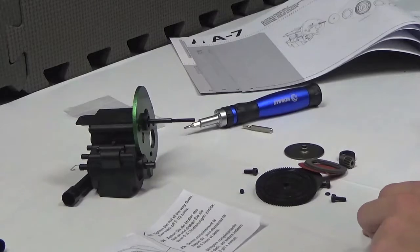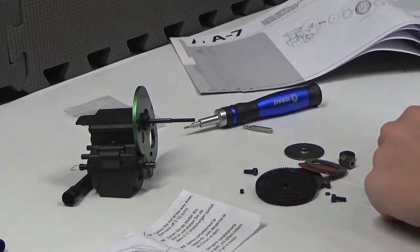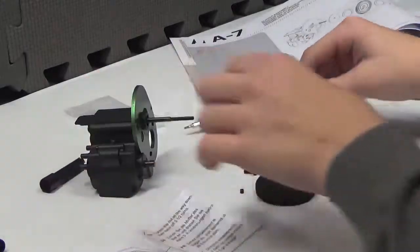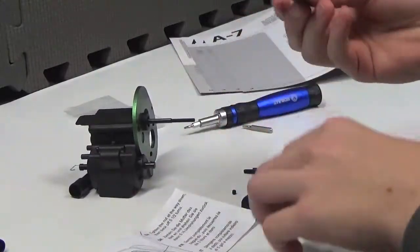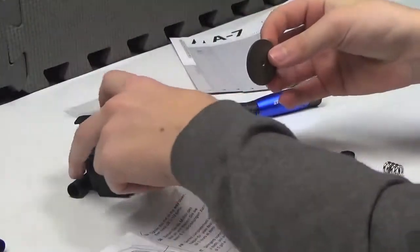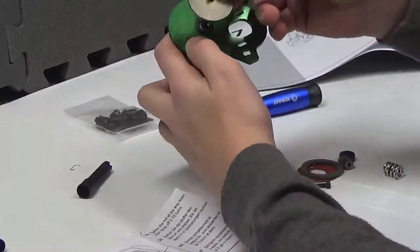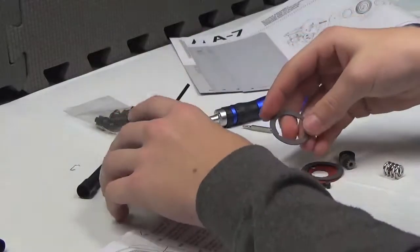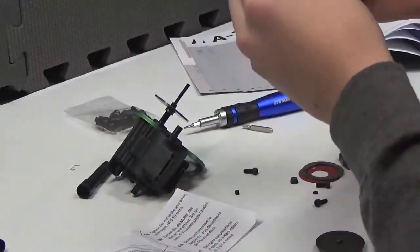All right, so first of all we're going to need to take this piece right here, and we're going to stick it on the flat side up like that, and then we're going to need one of these pieces on the gear like that.